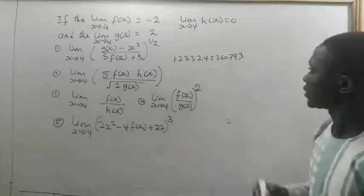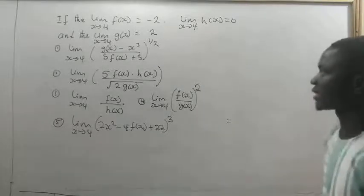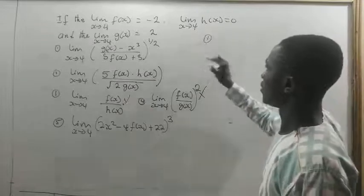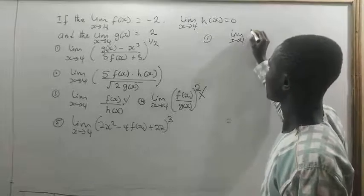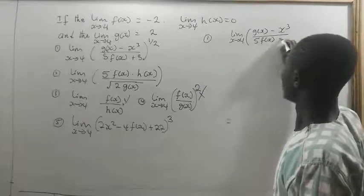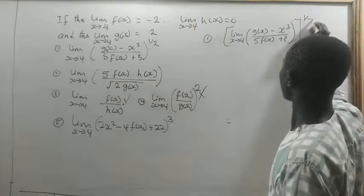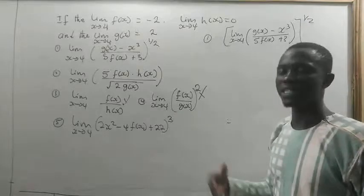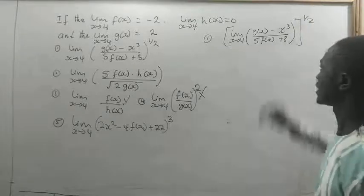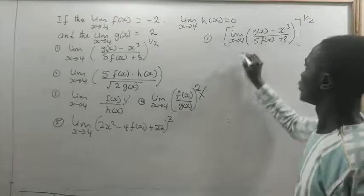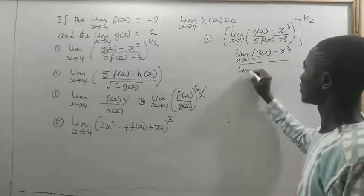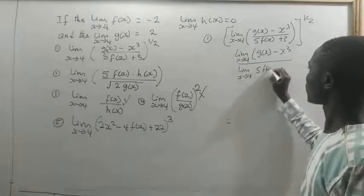Let's take Example 1: the limit as x approaches 4 of g(x) minus x cubed, divided by 5 times f(x) plus 3, all to the power of one half. The limit of the quotient is the quotient of the limits, so we take the limit as x approaches 4 of [g(x) minus x cubed] divided by the limit as x approaches 4 of [5f(x) plus 3], all to the power of one half.